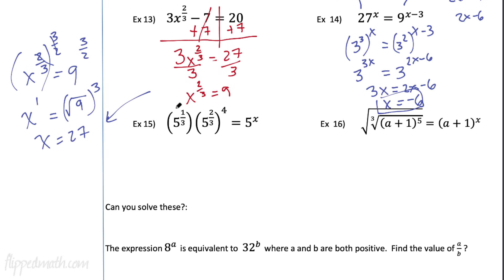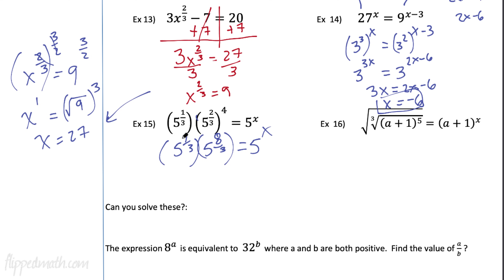Let's check out number 15. We have 5 to the 1/3 times 5 to the 2/3, where that second term is raised to the 4th power, and all of that equals 5 to the x. Deal with the exponent first — multiply: 4 times 2/3 gives 8/3. So we have 5 to the 1/3 times 5 to the 8/3. Common bases being multiplied means add the exponents: 1/3 plus 8/3 equals 9/3, which is just 3. So 5 to the 3 equals 5 to the x, and since the bases are the same, x equals 3.